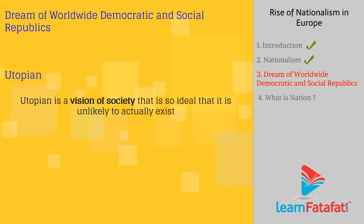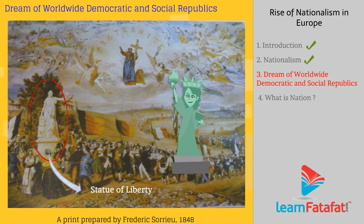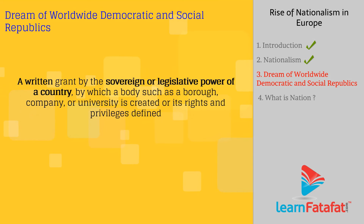Utopian refers to a vision of society that is so ideal that it is unlikely to actually exist. This is the Statue of Liberty. The French Revolution artist personified this as a female figure, who bears the torch of enlightenment in one hand and the charter of the rights of man in another.